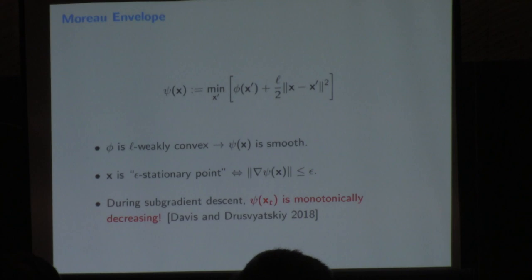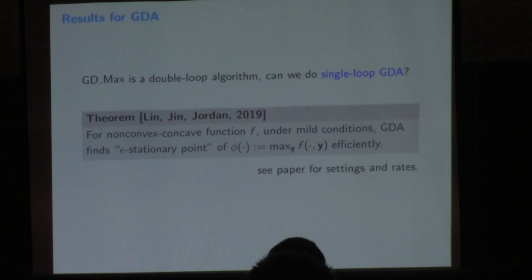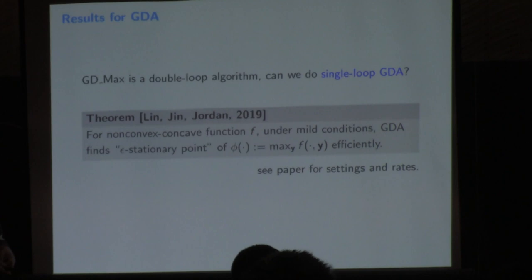GD-max is a double-loop algorithm — the inner loop approximately maximizes and the outer loop does gradient descent. For a single-loop algorithm like GDA, we also prove similar results, but now we strictly need the non-convex concave structure, since the max must be solved by gradient ascent. Under these conditions, GDA also finds an epsilon-stationary point of phi efficiently.